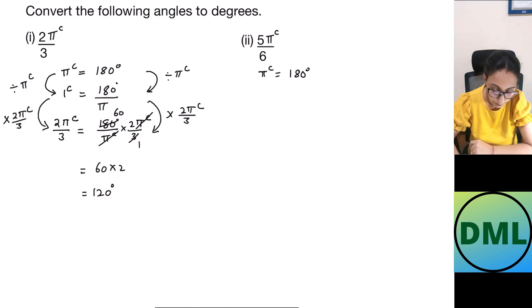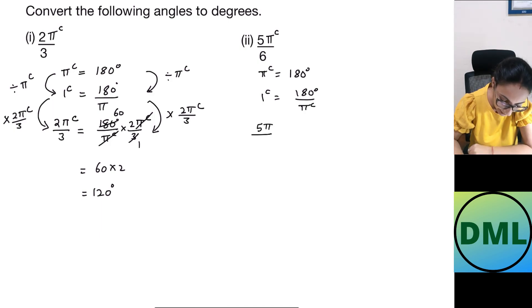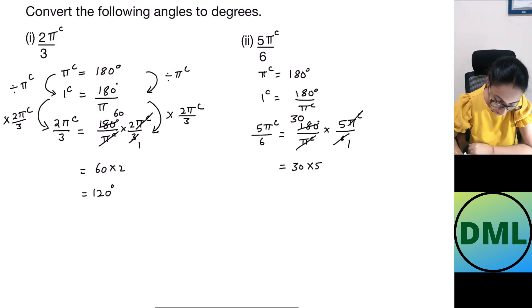One more example: convert 5π/6 radians into degree measure. π radians = 180 degrees, so 1 radian = 180/π degrees. For 5π/6 radians: (180/π) × (5π/6). The π cancels, and dividing 180 by 6 gives 30, so the answer is 30 × 5 = 150 degrees. So 5π/6 radians equals 150 degrees. Thank you so much for watching. I hope you enjoyed the video — don't forget to like, subscribe, and leave a comment below. Bye bye everyone.